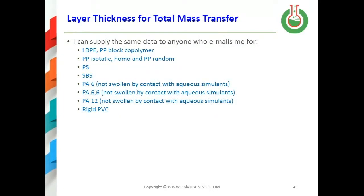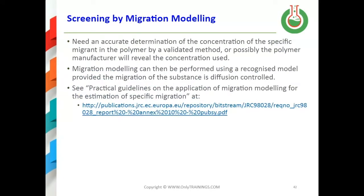You can also screen using an accepted migration diffusion model. You need an accurate determination of the concentration of the migrant in the polymer — either from a validated method or possibly from the polymer manufacturer under a confidentiality agreement, often arranged through an independent lab or consultant. Migration modeling can then be performed using one of the recognized models, provided migration of the substance is diffusion controlled. There is practical guidance on the application of migration modeling for estimation of specific migration available via the referenced web link.